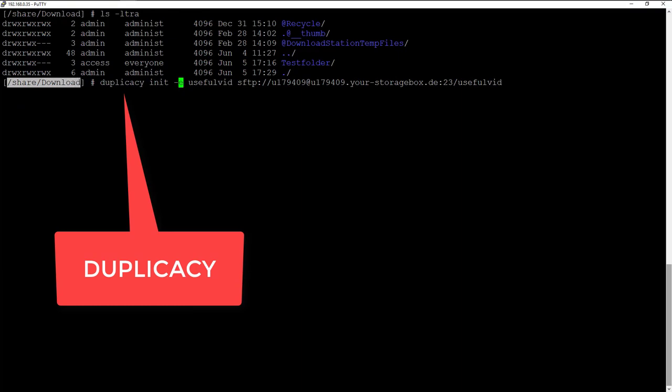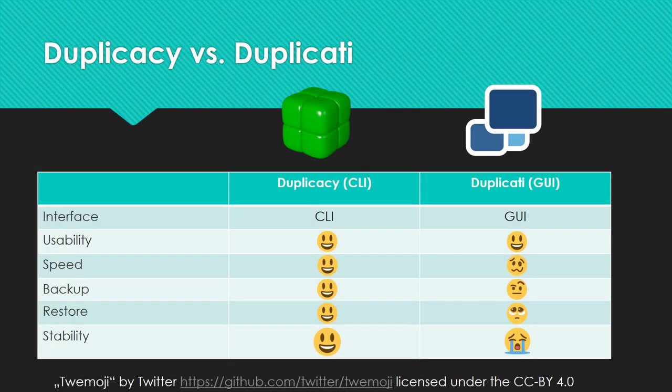Duplicatee is much faster than Duplicatee. Duplicatee takes 8 hours to build up the database for the restore, and no single file was restored in this period. It would have taken 5 days until the restore had been completed. The same amount of files can be recovered with Duplicatee in under 2 days. Duplicatee cannot download several files from your cloud provider at the same time. I used Jota Cloud, which has the possibility to download 6 streams in parallel, but this was not used by Duplicatee and the download speeds were insanely slow.